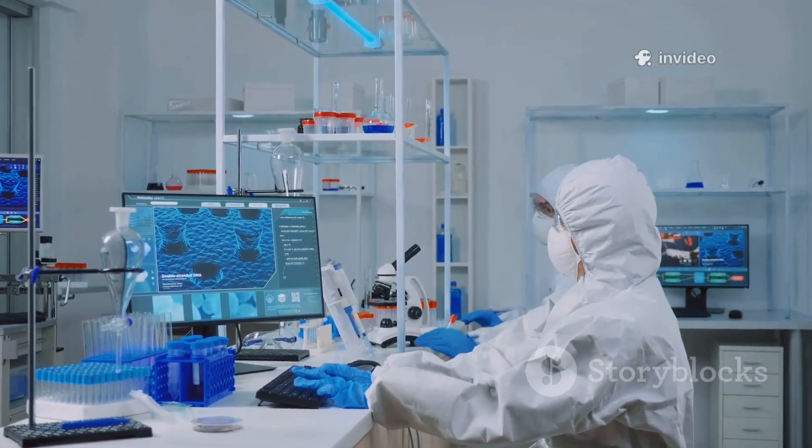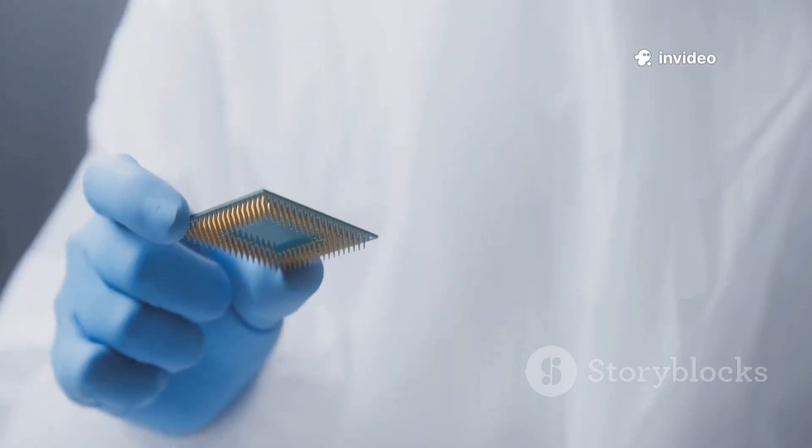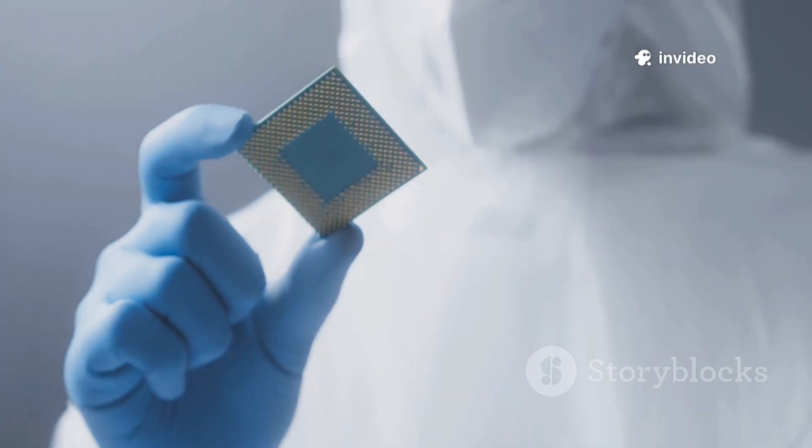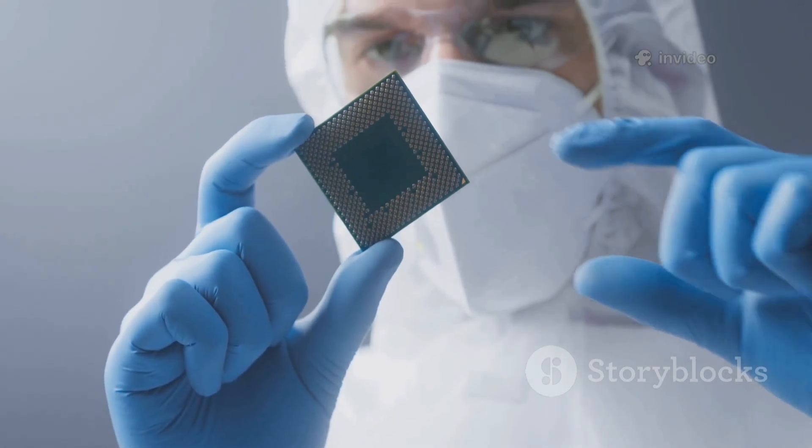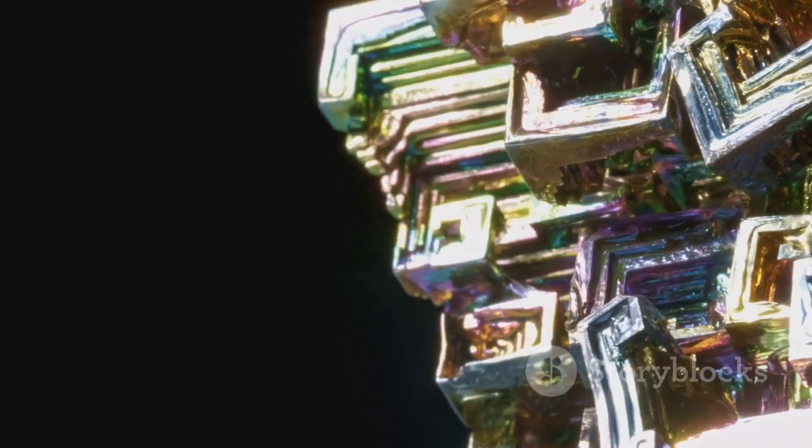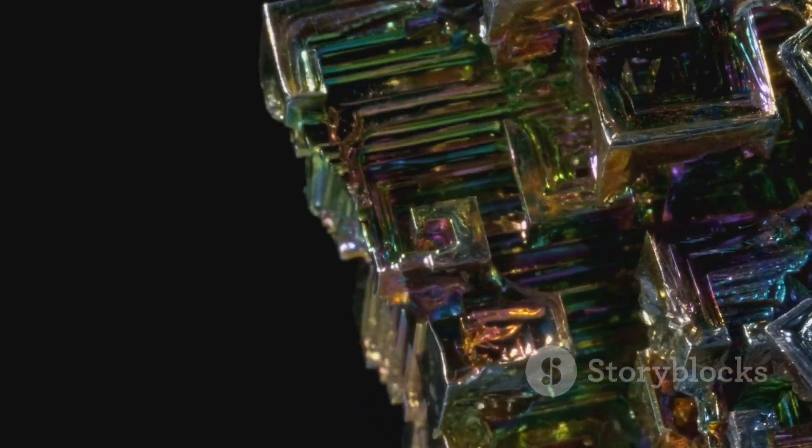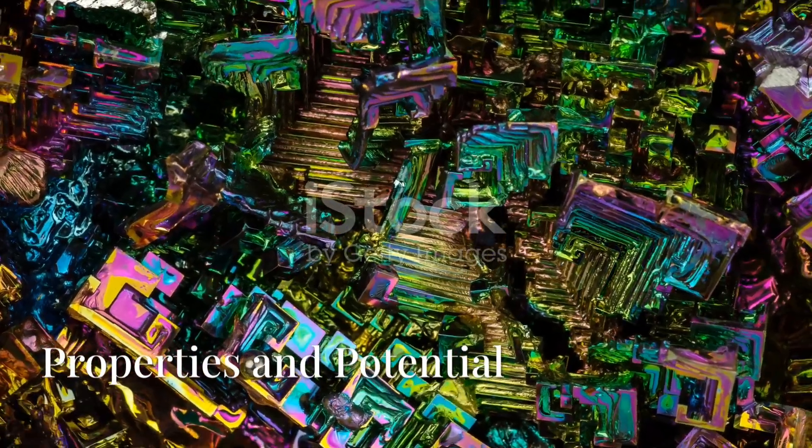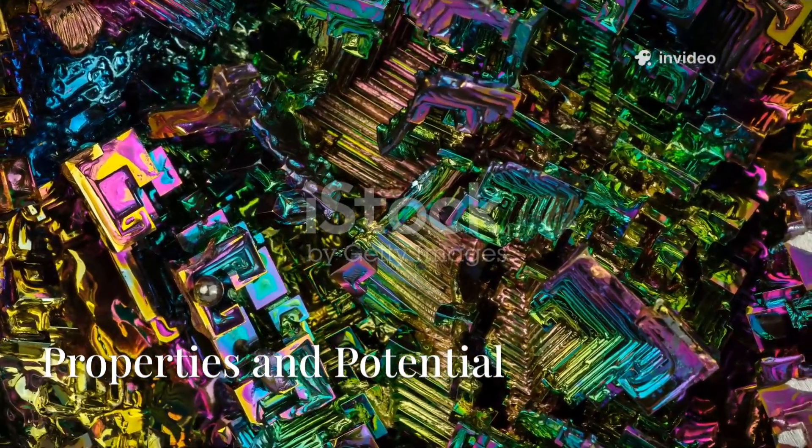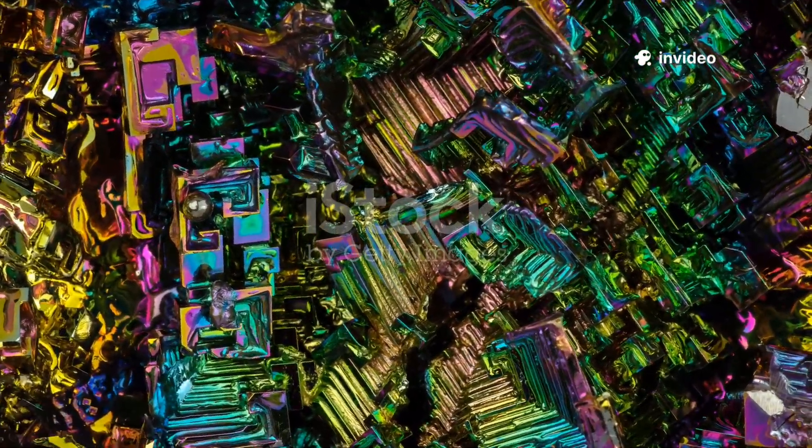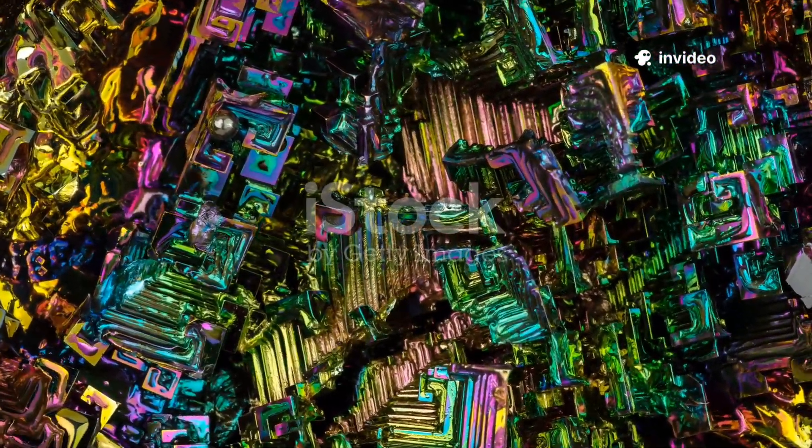And that's why scientists started looking for something new. Something that not only replaces, but opens completely new paths. And that's where an old acquaintance from the periodic table started shining. The iridescent crystal that could replace silicon. Its name is bismuth.